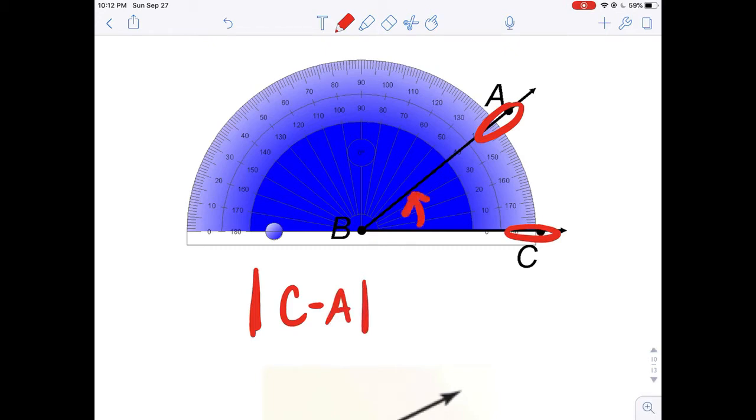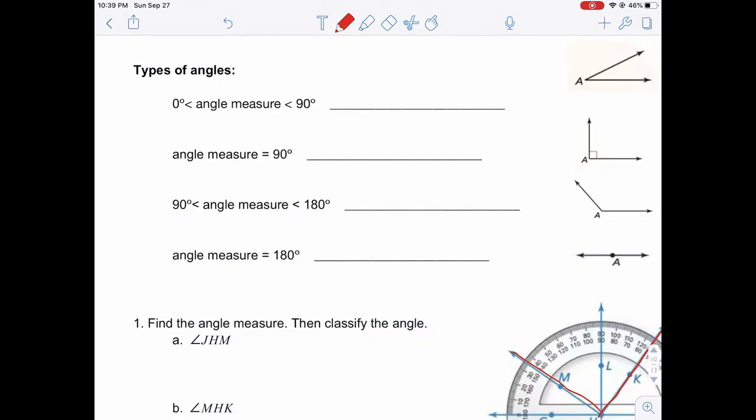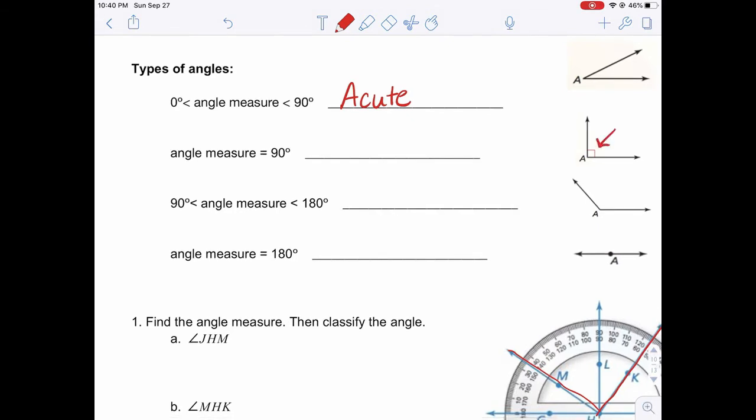We can classify angles based on their measure. If we have an angle with a measure between 0 and 90 degrees, we can call that angle acute. Our little trick here is: isn't it a cute little angle? Tiny little angles, like tiny little kids, can sometimes be pretty cute. The second kind of angle we can classify are those that are equal to 90 degrees. Oftentimes you'll see them represented in a picture with a little box in the corner. That means it has a measure of 90 degrees, which means we call it a right angle.